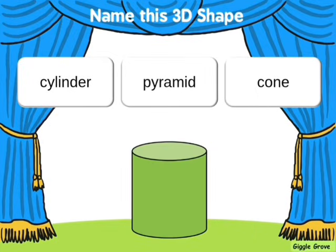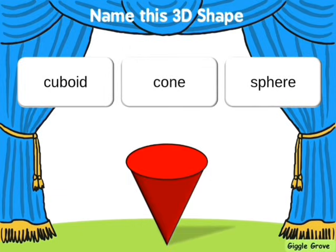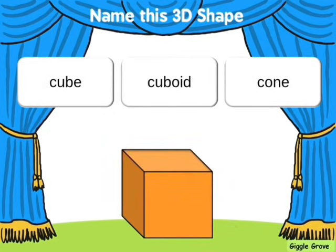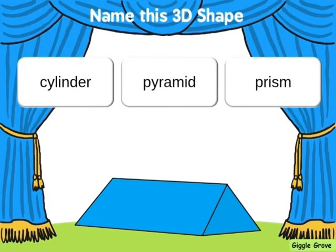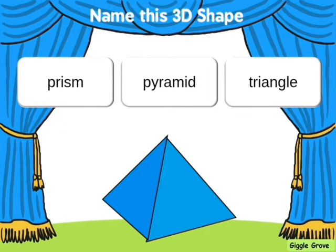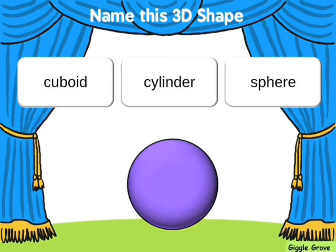Cuboid. Cylinder. Cone. Cone. Cube. Prism. Pyramid. Sphere.